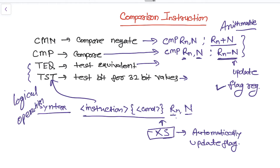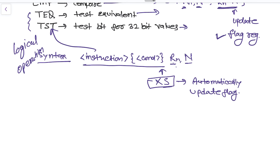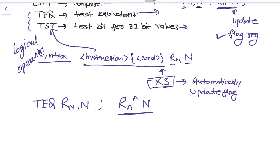For TEQ, if we write TEQ Rn and capital N, what it will do is compute the XOR of Rn and N. According to the result of that XOR operation, it will update the flag register.